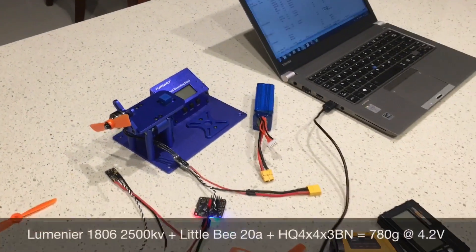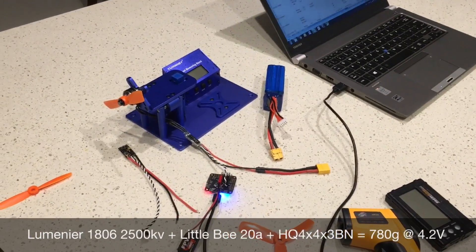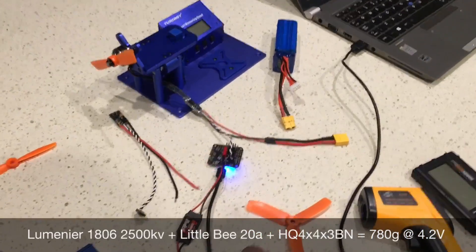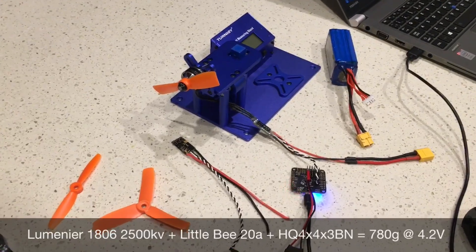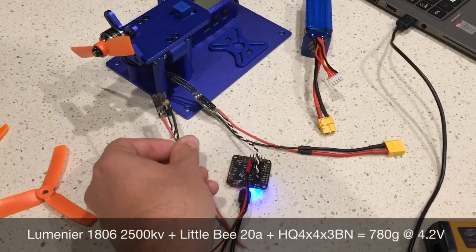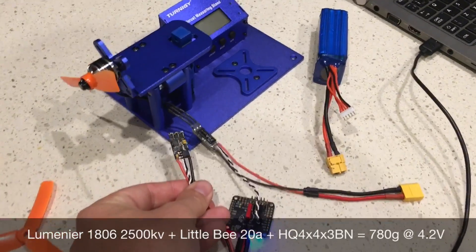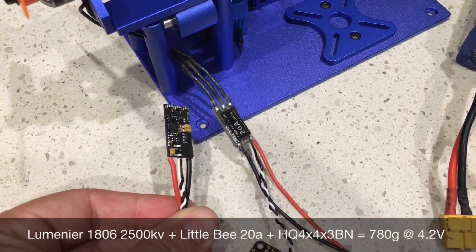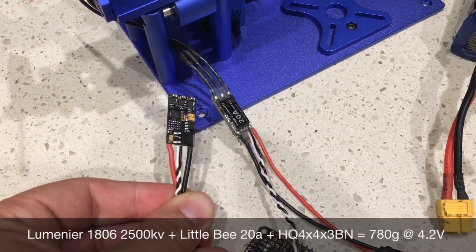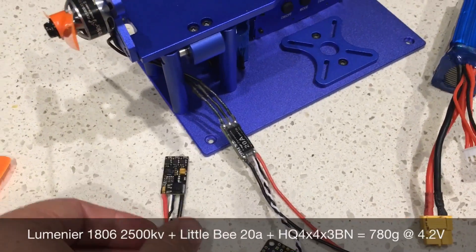I used a thrust measuring stand to test some prop options for this 1806 2500 kV Lumenier motor and also to test some ESC options, in particular the Little Bee 20 amp ESC and this ZTW Spider 20 amp Pro ESC.